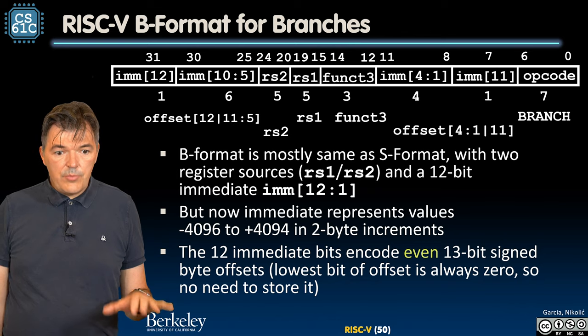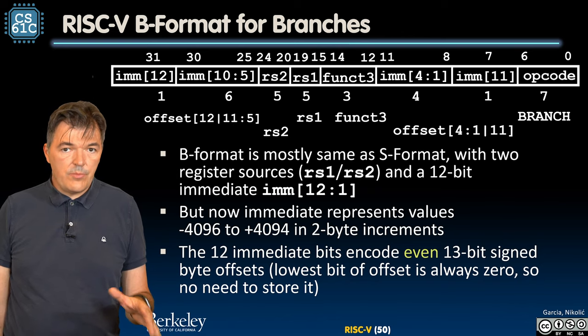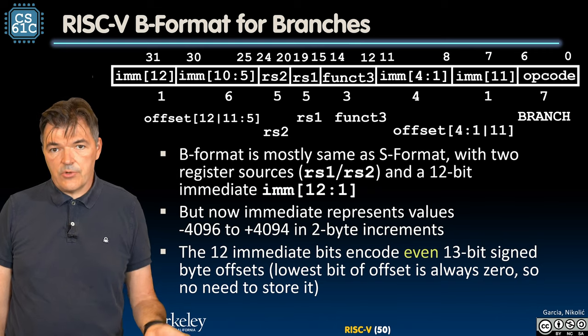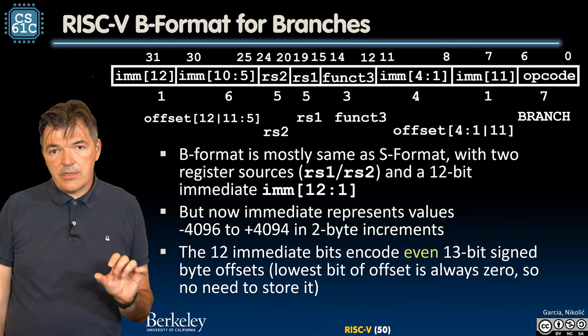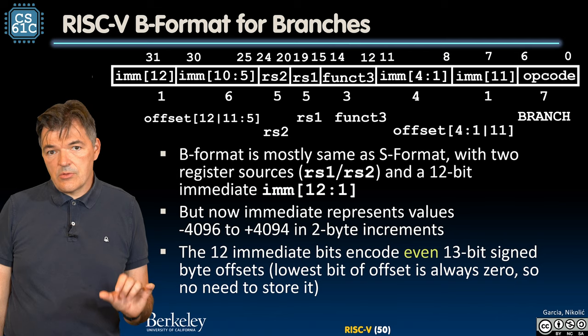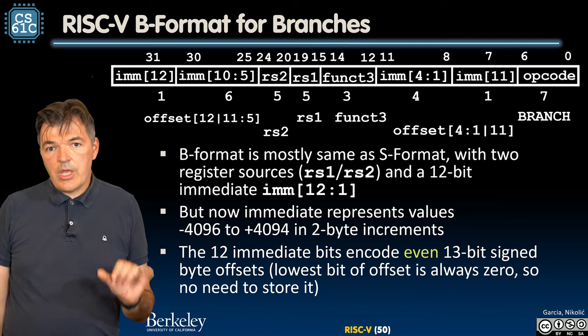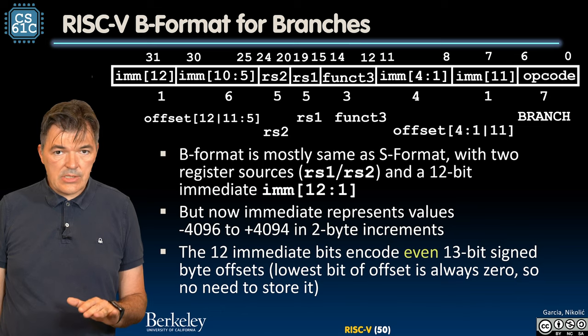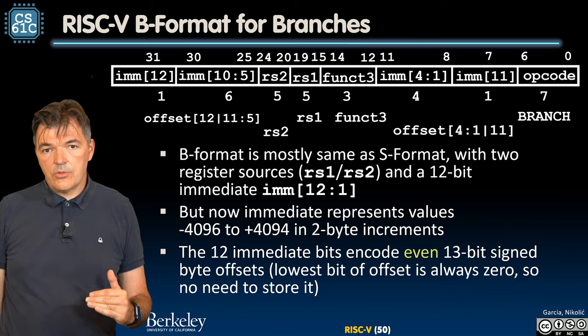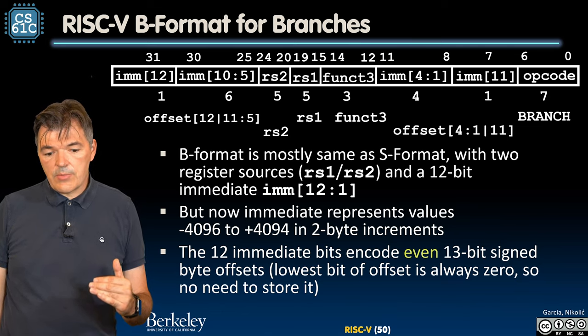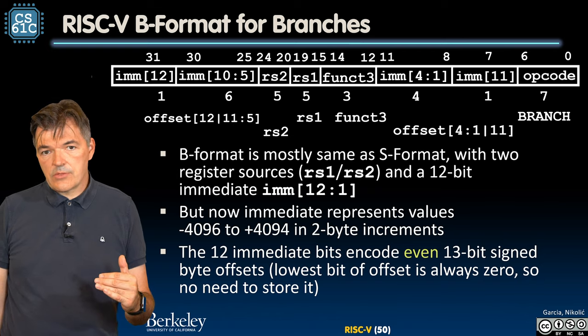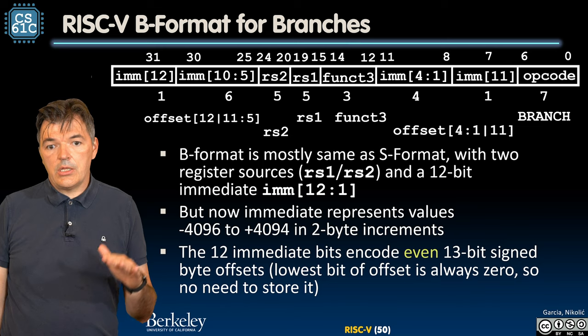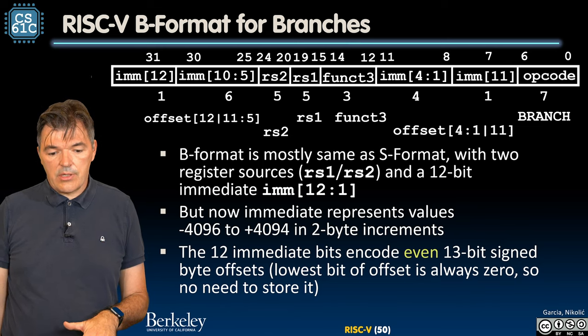Instruction encoding for B types, for B format, encoding is similar to the S format, except that the immediate now uses those 12 bits to encode a 13-bit range. The last bit is always zero because we use this range to represent values of minus 4096 to plus 4094 in two byte increments.